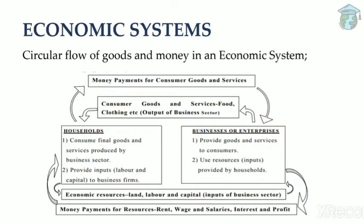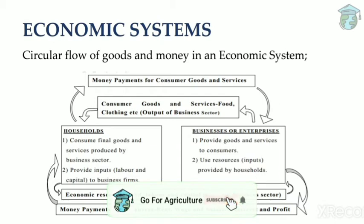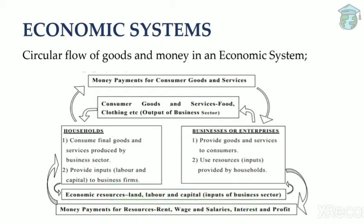Let's start with economic systems. Economic systems are the circular flow of goods and money. Every economy is a system in which the production of many goods is organized to satisfy human wants. In an economic system there are two units: households and the business or enterprise. Households consume the goods and services produced by the business sector, and in return we provide them inputs such as capital or labor to the business firms.